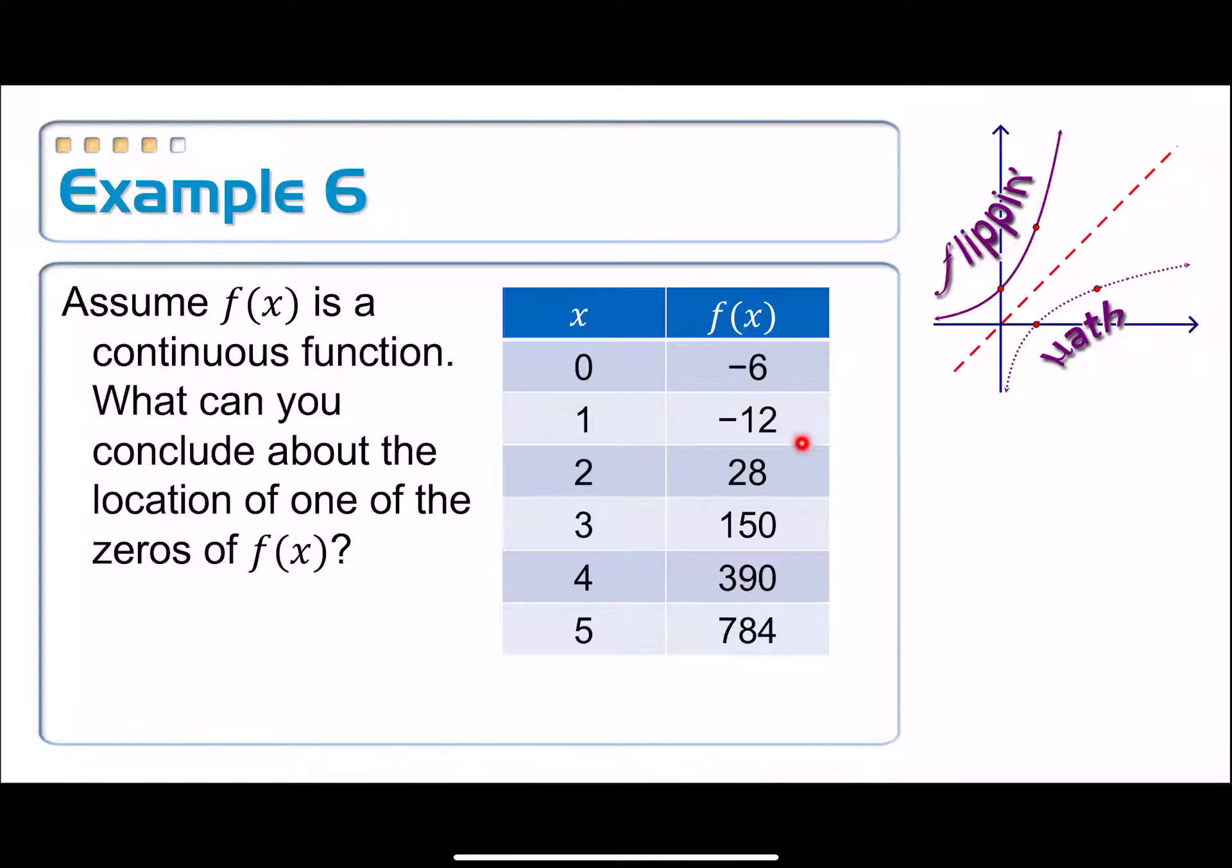So if we look at the y values here, in order to move from the negative side here, from negative 6, negative 12, up here to 28, I have to pass zero in between those two things because the function is continuous. There's no holes there. There's no gaps. There's no asymptotes. You have to go from negative 12 to 28 by passing zero.